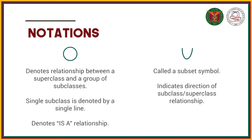For our notation, we have a circle shape that denotes the relationship between a superclass and a group of subclasses, representing the is-a relationship. When there are multiple subclasses, connect them to the circle before extending it to the superclass. But if there is only one subclass, just use a straight line with no circle.